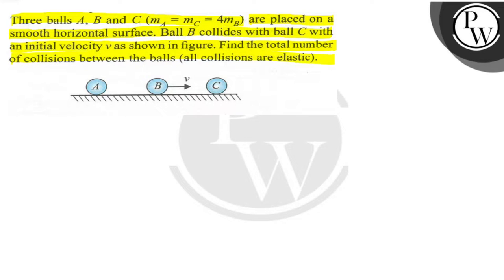So here the mass of B is M, mass of C is 4M, and mass of A is also 4M. All collisions are elastic. First we consider the collision between B and C.